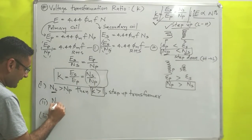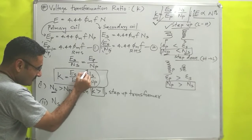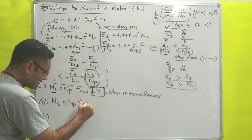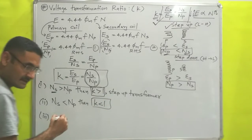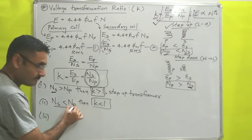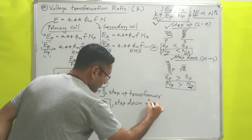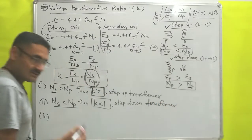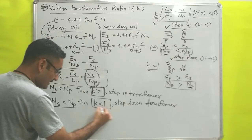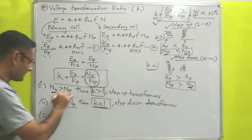Second case: if Ns is less than Np, then the ratio Ns / Np is less than one, so K is less than one. When the number of turns in the secondary is less than in the primary, we are talking about a step-down transformer. Therefore, for a step-down transformer, the value of K is always less than one.